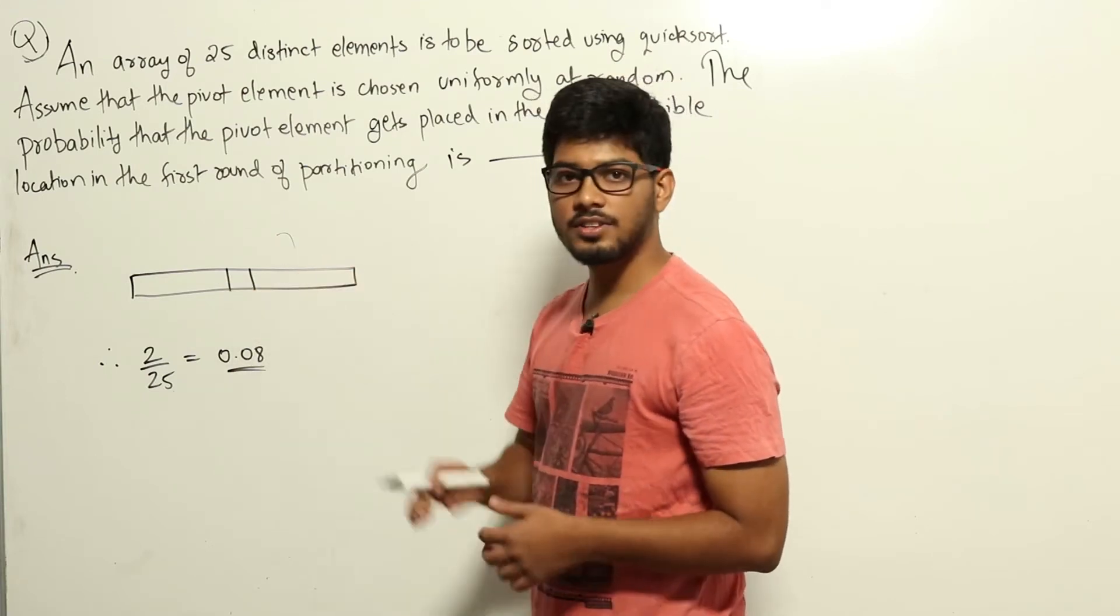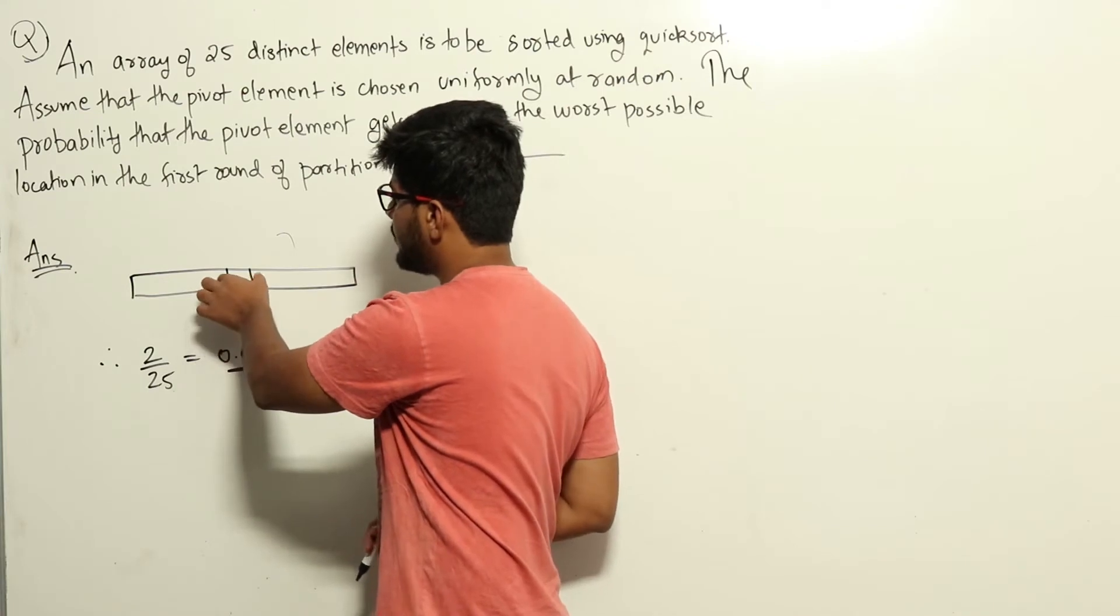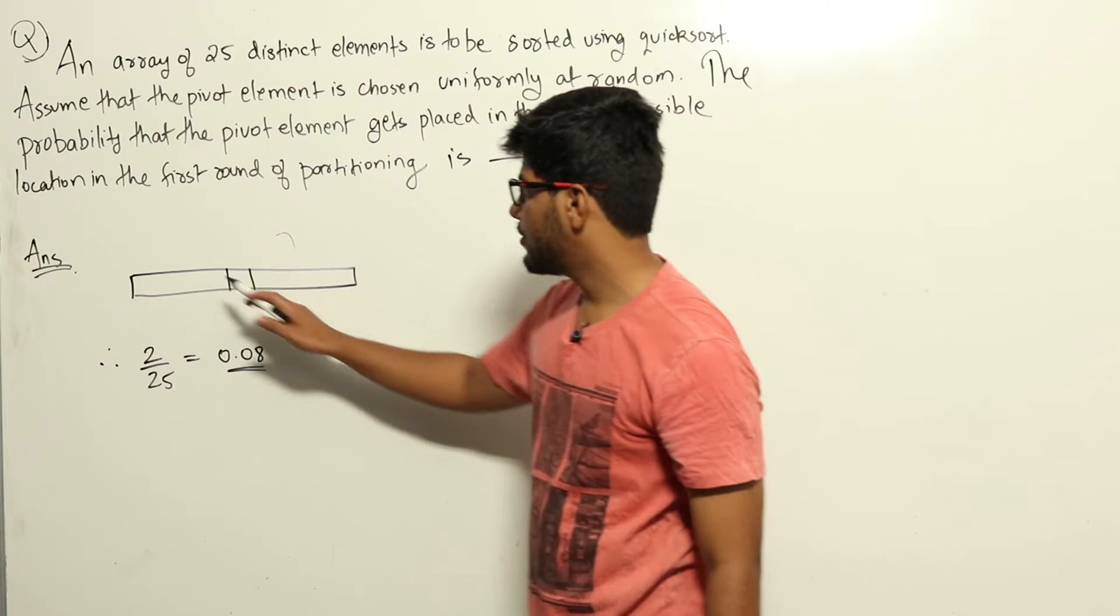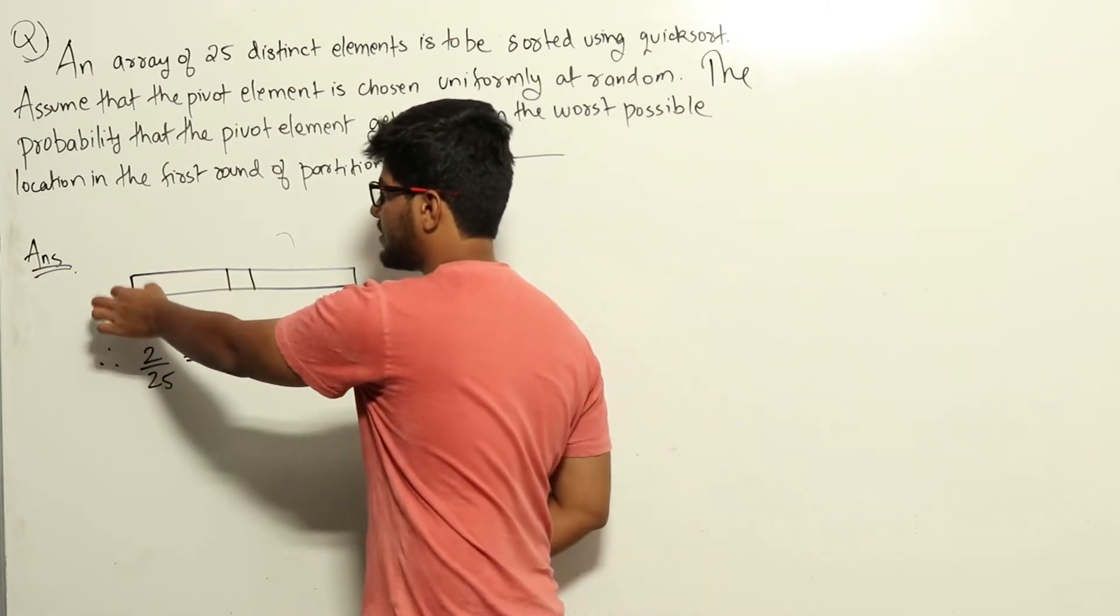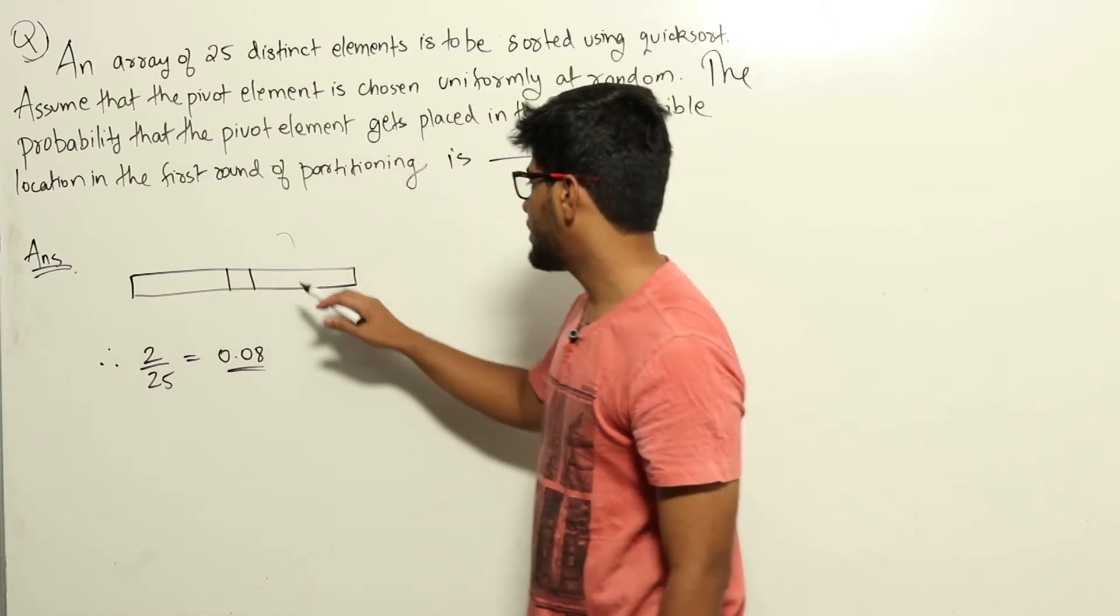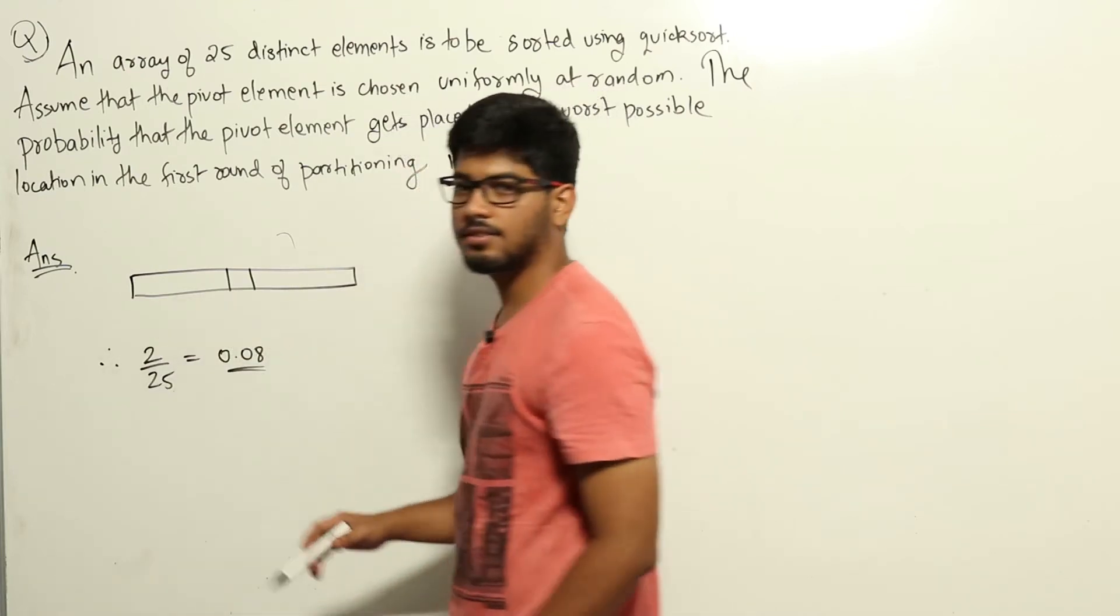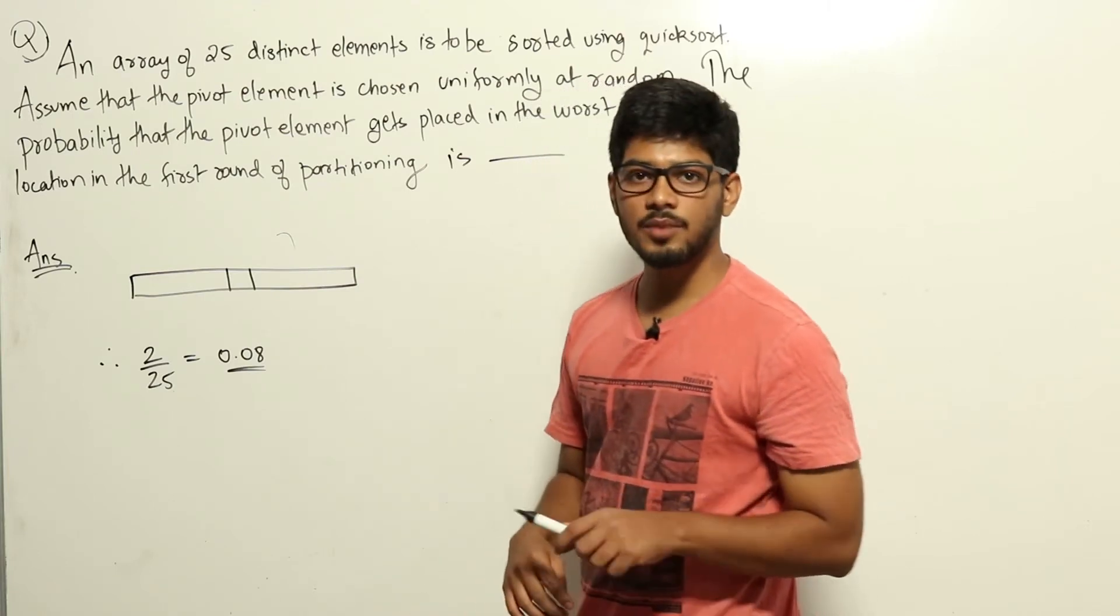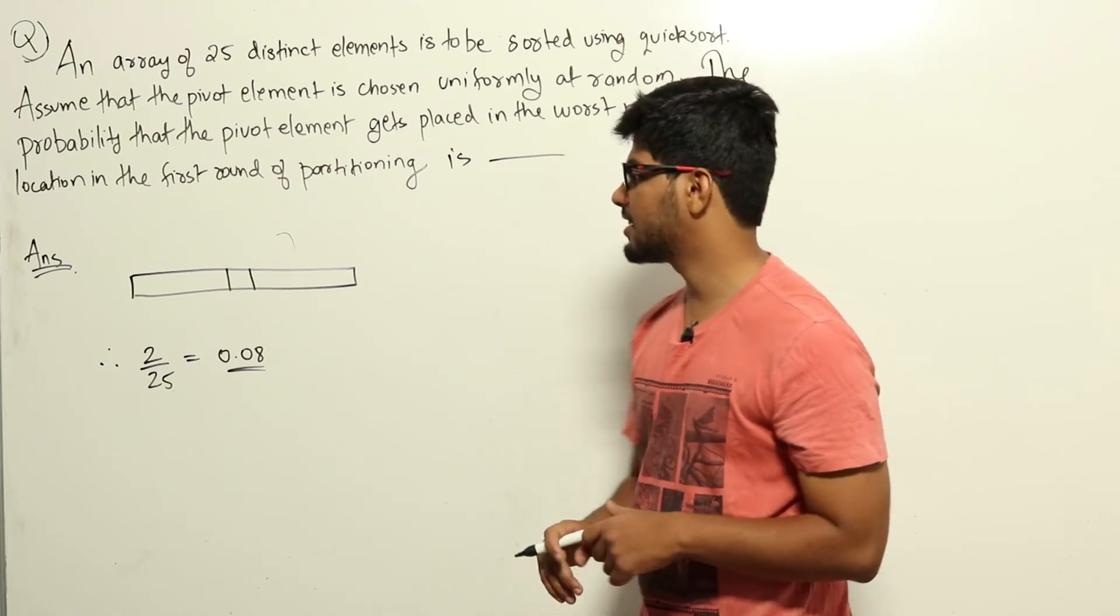Quicksort gives us the worst possible time case if the pivot element we choose goes to the leftmost side or the rightmost side. Either the pivot element can be placed on the leftmost side, in which case we call quicksort on the rest of that part, or we place the pivot element on the rightmost side and call quicksort on the rest of the array. In those two cases, it will give O(n²) complexity. Please learn about quicksort if you don't understand how we get O(n²) complexity in such cases.